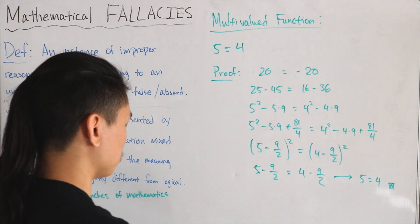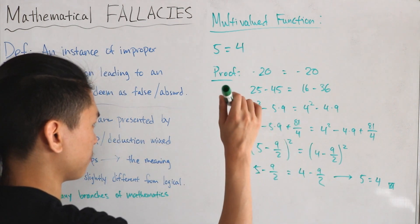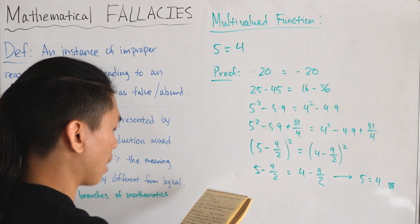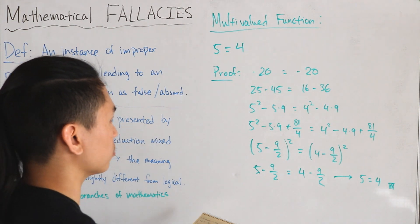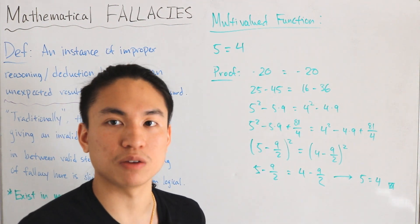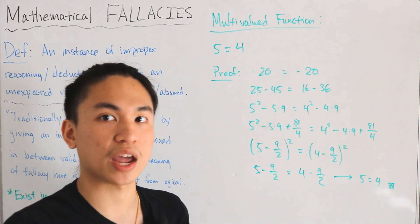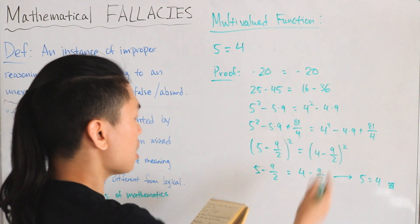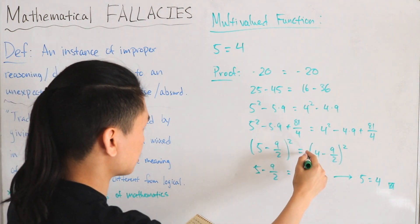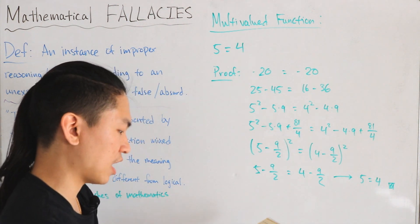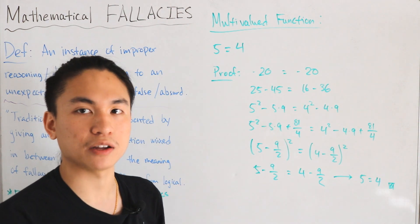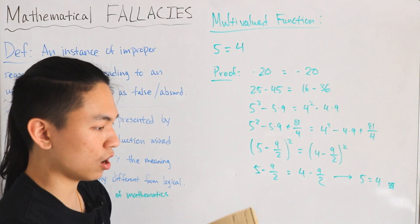The fallacy exists at the square root step. When a² = b², this only implies a = b if a and b have the same sign — otherwise you could have a = -b. Since square roots have both positive and negative values, the correct step is to write 5 - 9/2 = -(4 - 9/2). Adding 9/2 to both sides then gives 5 = 5, which is valid. This is how you handle square roots carefully.